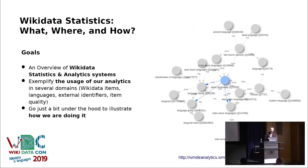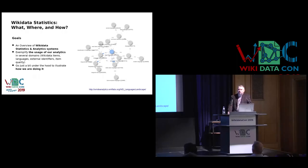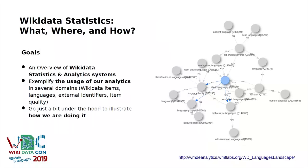The goal of this talk is a somewhat failed attempt to communicate an almost endlessly technically complicated field in terms that can actually motivate people to start making use of these analytical products, which we are really putting a lot of effort into. I will try to provide an overview of the Wikidata statistics and analytics systems, exemplify the usage of some of them, and go just a little bit under the hood to illustrate how it is done.